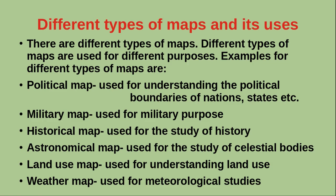There are different types of maps used for different purposes. For example, a political map is used for understanding the political boundaries of nations, states, etc. A military map is used for military purposes like planning war operations, rescue operations, etc. A historical map is used for the study of history.